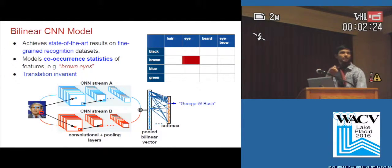For example, suppose you want to model the phenomenon of brown eyes. So if a feature fires for the color brown, and if another filter in the CNN fires for eyes, then the co-occurrence of these two would give you brown eyes.